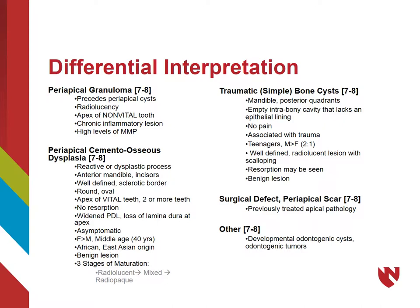Periapical cementoosseous dysplasia, or PCOD, is also another possible diagnosis. Resulting from a reactive or dysplastic process and occurring most often in the anterior mandible, PCOD lesions can also appear as round, well-defined radiolucencies with a sclerotic border. However, these lesions are located at the apex of vital teeth and do not cause resorption, but can lead to a widened PDL and loss of the lamina dura at the apex of the affected teeth. PCOD is also asymptomatic, much like radicular cysts. The demographics are different, usually occurring in middle-aged females, especially those of East Asian or African origin. These benign lesions can change their appearance radiographically, changing from radiolucent to a mixed appearance to radiopaque as they age.